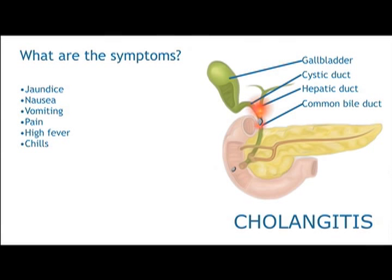The jaundice results from a buildup of bilirubin in the bloodstream, which in turn leads to excess bilirubin in the skin. Patients may also notice dark urine as a result of excess bilirubin. In addition, bowel movements may become pale, since it is bile that gives bowel movements their normal dark color.